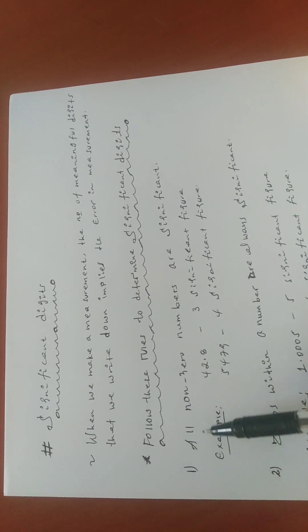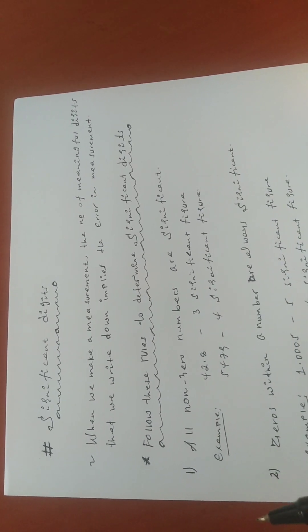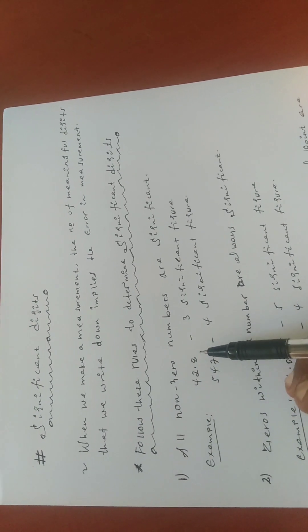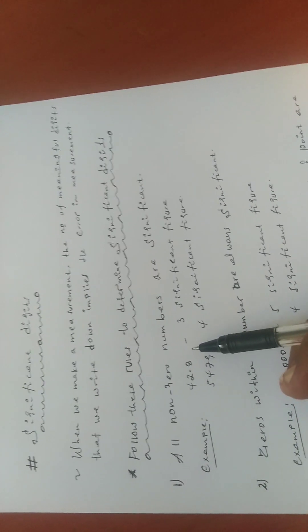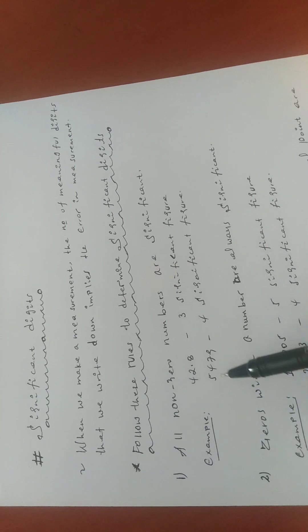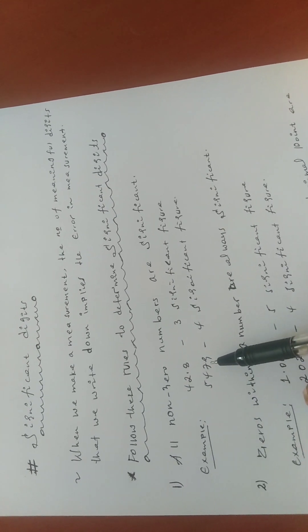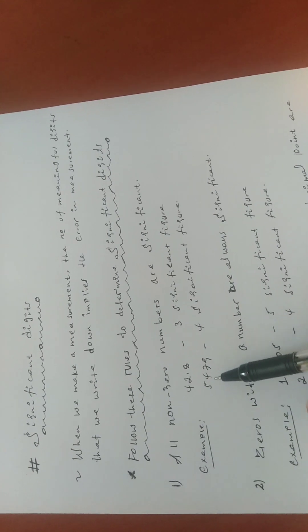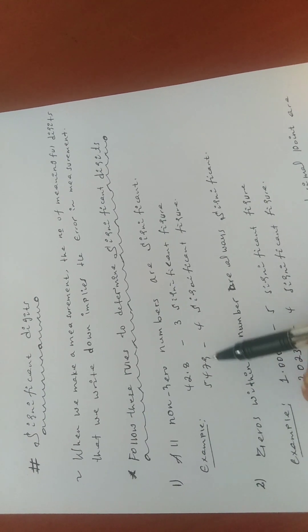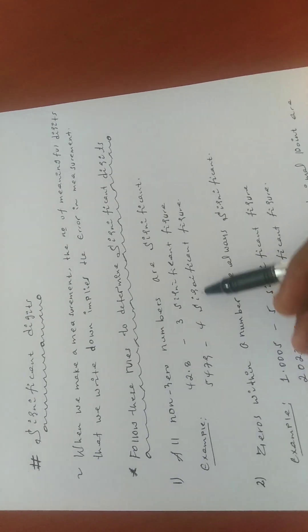The first rule says: all non-zero numbers are significant. For example, 42.8 — four, two, and eight are all significant, so this has three significant figures. 5479 does not have zero but all digits are significant, so this has four significant figures.